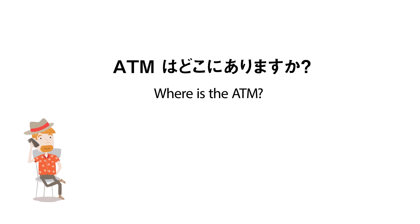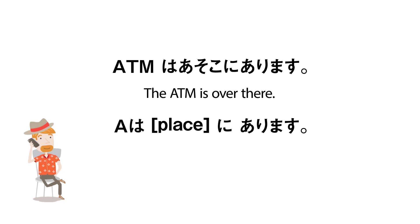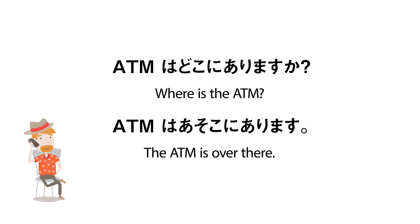Now, on to how you'll respond to this question. If the ATM is someplace far away but you can point to it, answer with: ATMはあそこにあります. あそこ means "over there," so you're saying the ATM is over there. You can keep adapting this pattern: [subject]は[place]にあります — to say where something is. You can also leave out the first part when the subject is obvious. So the question and answer would be: ATMはどこにありますか? — あそこにあります.